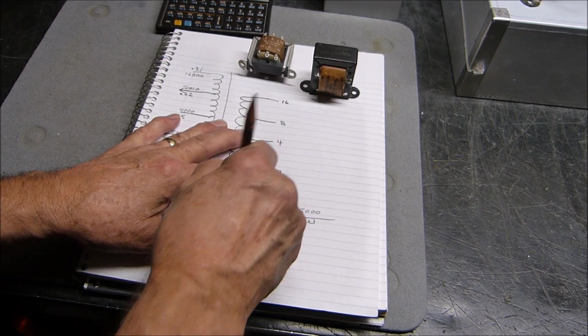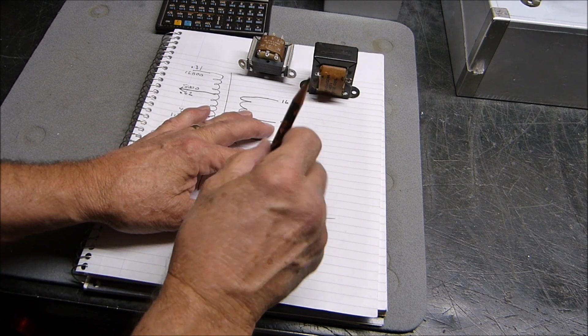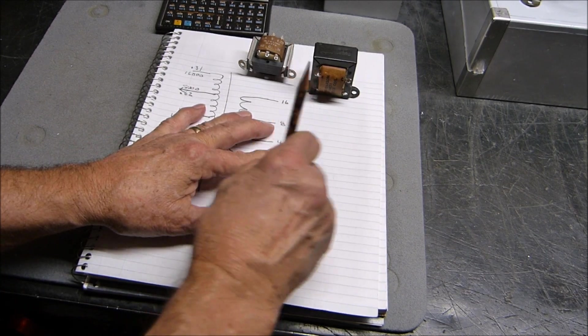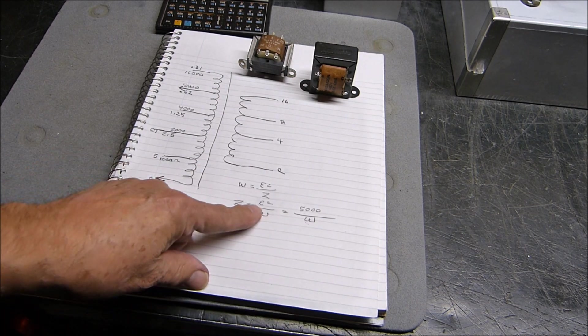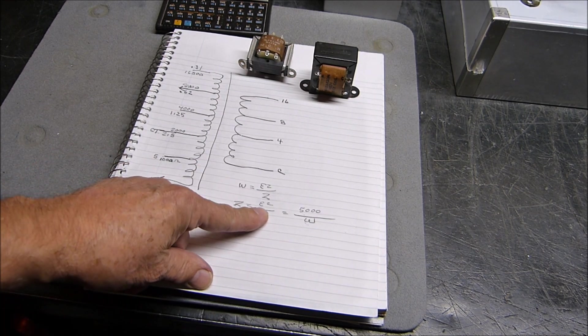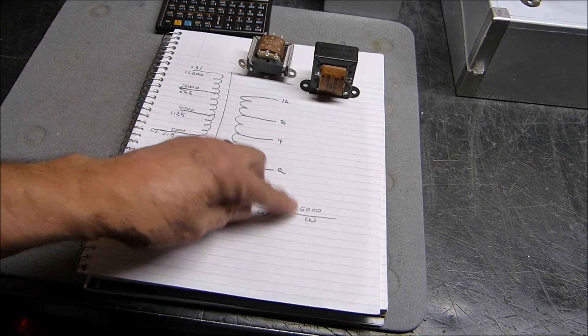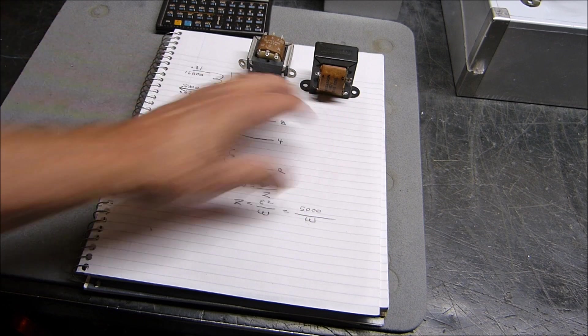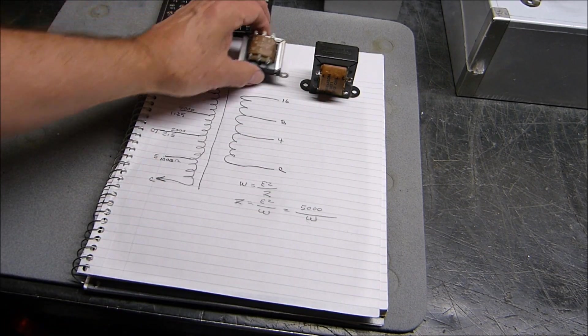E squared, 70.7 squared, is 5,000 every time. So we don't even have to figure this out anymore. Just remember 5,000. Now what we want is the impedance of these things, and we're dealing with this little transformer right here.